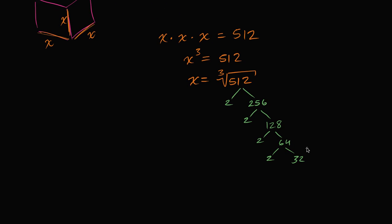Let's see, I can keep going. That's 2 times 16, which is 2 times 2 times 8, which is 2 times 4, which is 2 times 2. So 512, that's the same thing as 2 to the, let's see, you have 1, 2, 3, 4, 5, 6, 7, 8, 9. That's 2 to the 9th power.